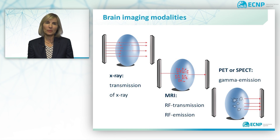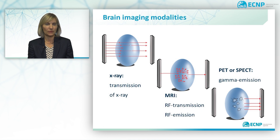You are probably familiar with how X-rays work. The MRI scanner uses a strong magnetic field and radio waves to generate images of the brain. The brain mainly consists of water, which contains hydrogen nuclei, also called protons.